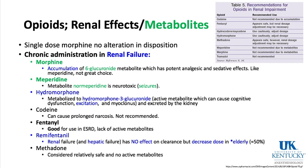Codeine can cause prolonged narcosis and is not recommended in renal failure. Fentanyl is good for end-stage renal disease because it has no active metabolites. Remifentanil is also a reasonable choice since it is cleared by esterases in the blood — no functioning kidney or liver required. However, reduce the dose in the elderly due to pharmacodynamic sensitivity. Methadone is considered relatively safe with no active metabolites. Summary recommendations: codeine not recommended; fentanyl safe; hydrocodone/oxycodone with caution; hydromorphone with caution; methadone seems safe; avoid Demerol, morphine, and tramadol in renal failure.